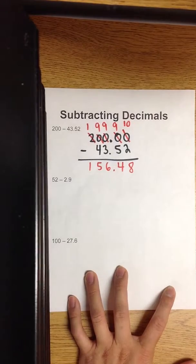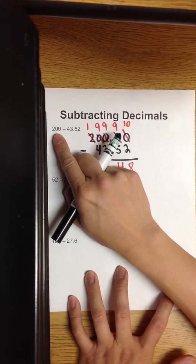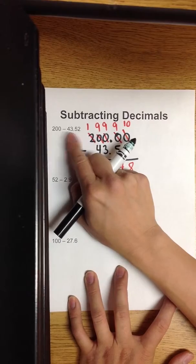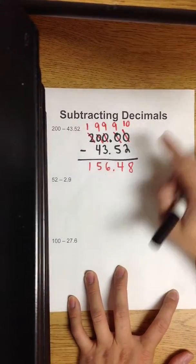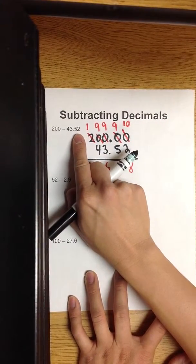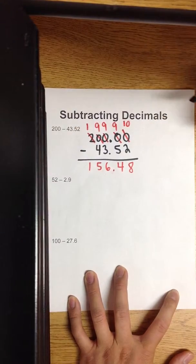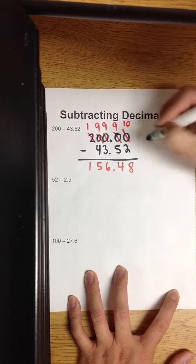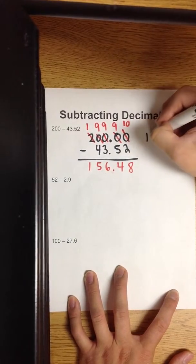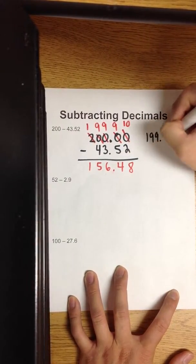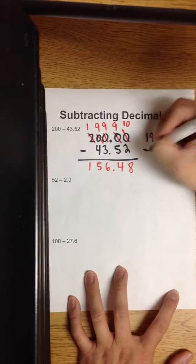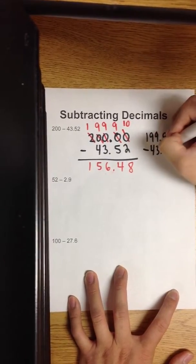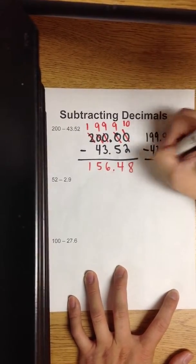There's a shortcut — I know a lot of kids like shortcuts. So let's take away a penny from both of these. Since this is in the hundredths place, we need to take one hundredth away from it. So two hundred dollars, if you take away a penny or one hundredth from it, it'll be 199 and 99 hundredths. Minus 43 and 51 hundredths.